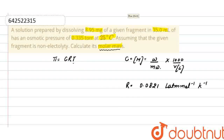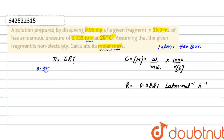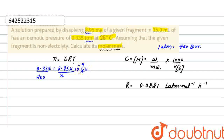First, the osmotic pressure is given in torr. We will convert this into atmospheres. As we know, 1 atmosphere equals 760 torr. So osmotic pressure is 0.335 divided by 760. For molarity, the weight of solute is given as 8.95 mg — to convert it into grams, multiply by 10 raised to the power minus 3. Molecular weight we have to find out, and volume is 35 ml.